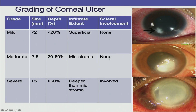It is important to know the grade of the ulcer — mild, moderate, or severe. If it is less than 2 mm in size, 20% depth, superficial, then it is mild. Two to 5 mm, 20 to 50% depth, mid-stroma is moderate. More than 5 mm, more than 50% depth, deeper than stroma is severe.